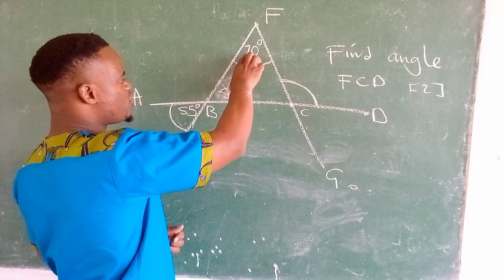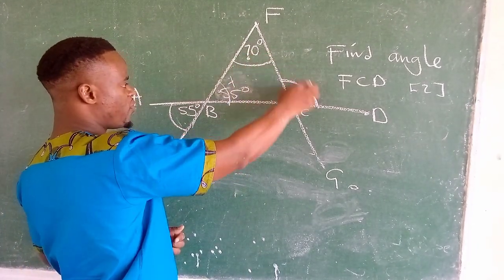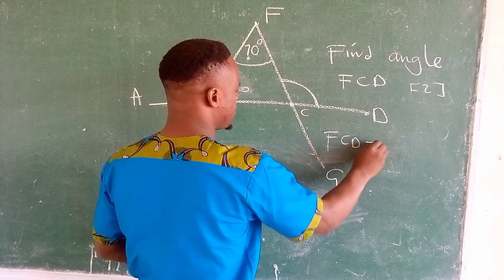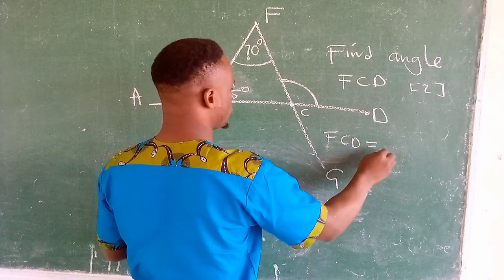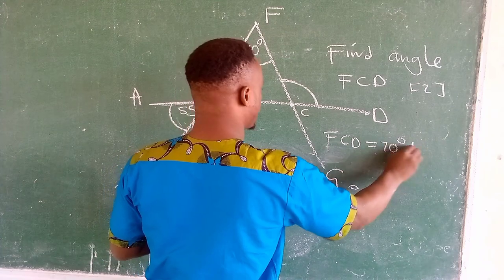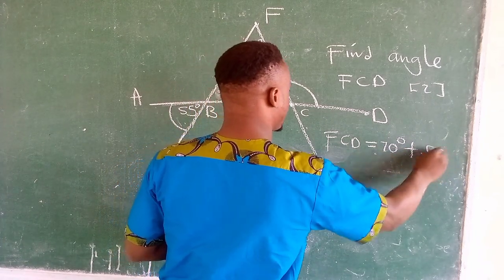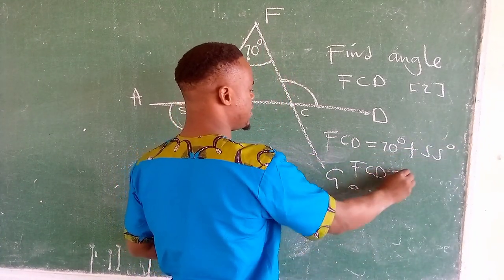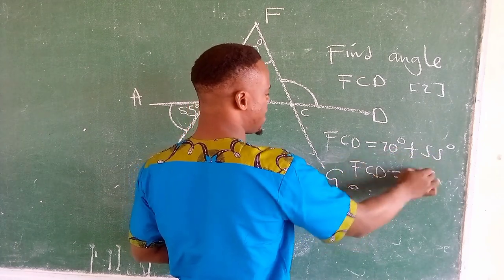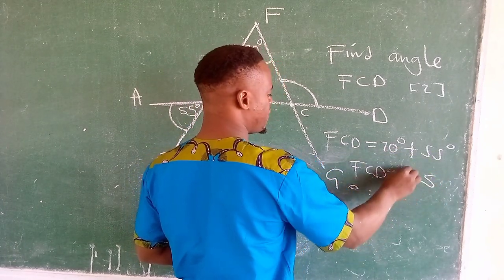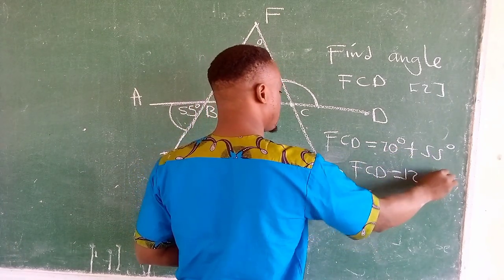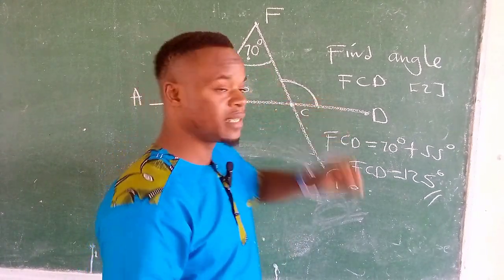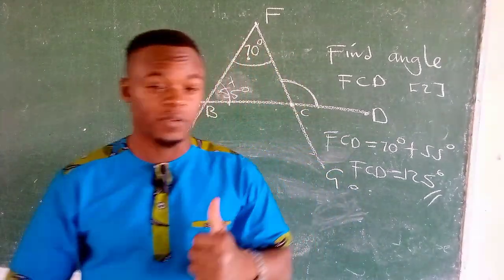So now we need to add these together. We can say angle FCD is equal to 70 degrees plus 55 degrees. When you add these two, you have 125. So angle FCD is equal to 125 degrees.